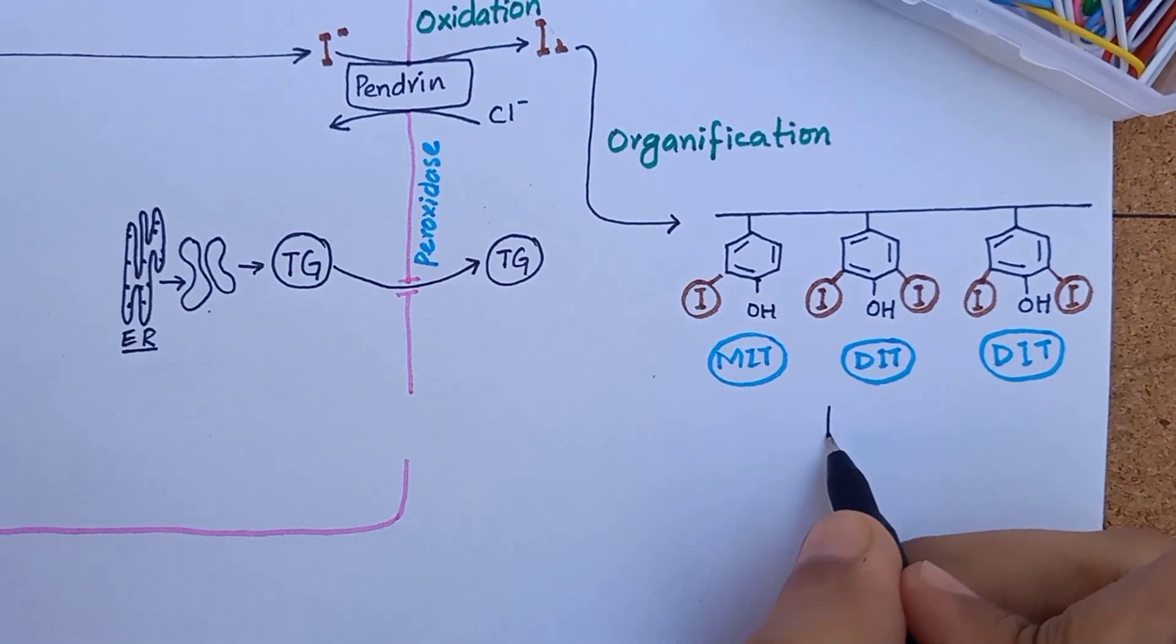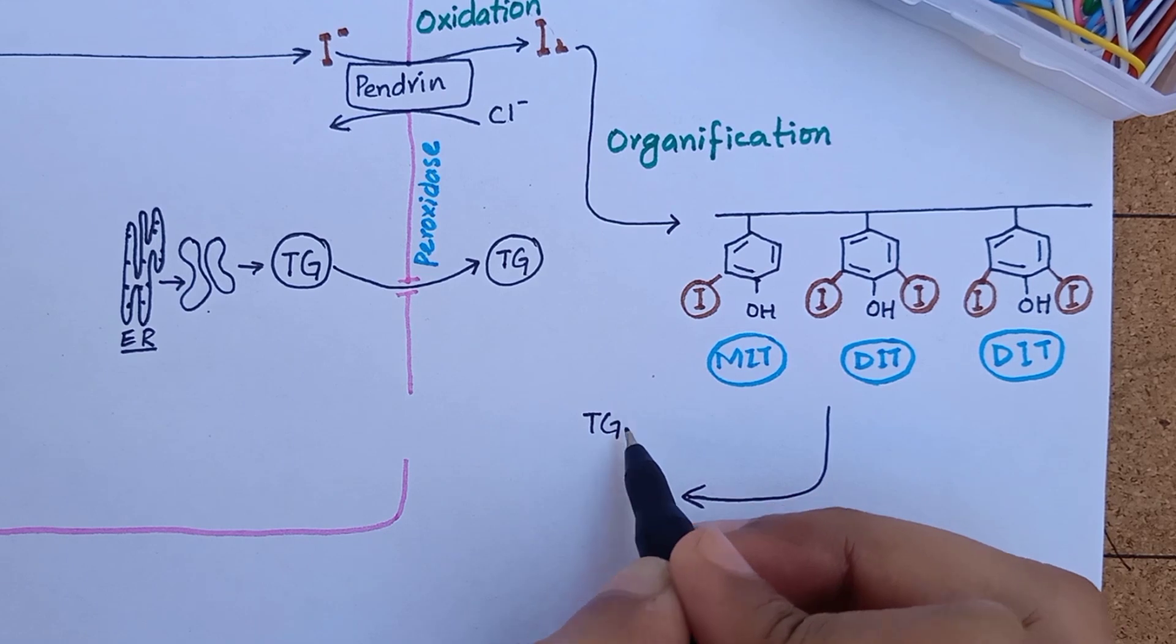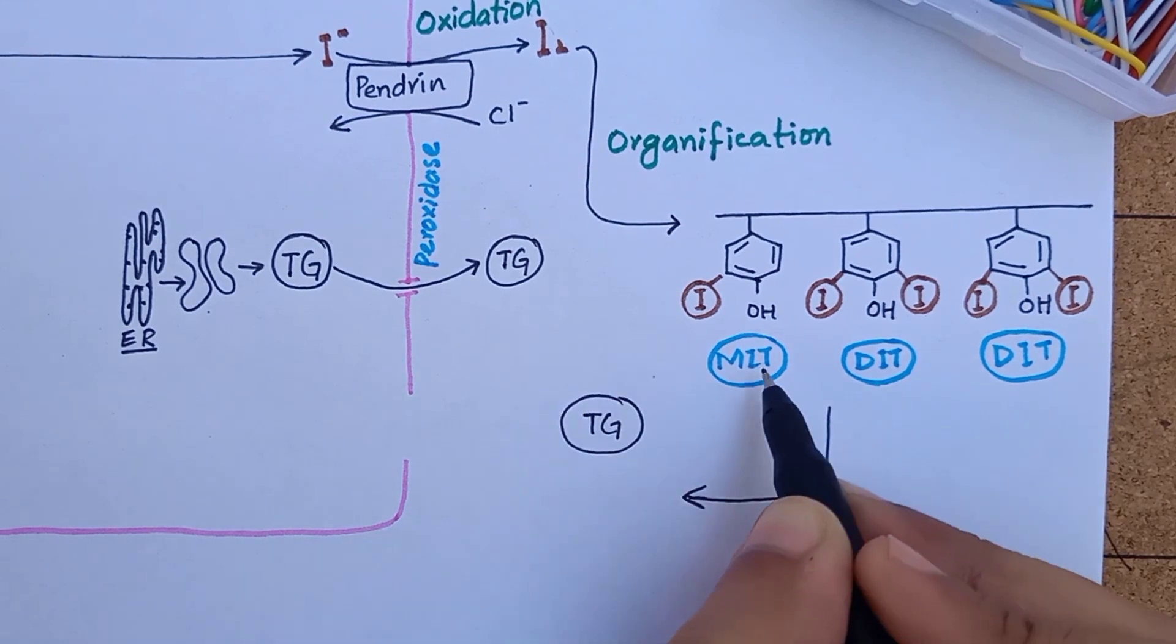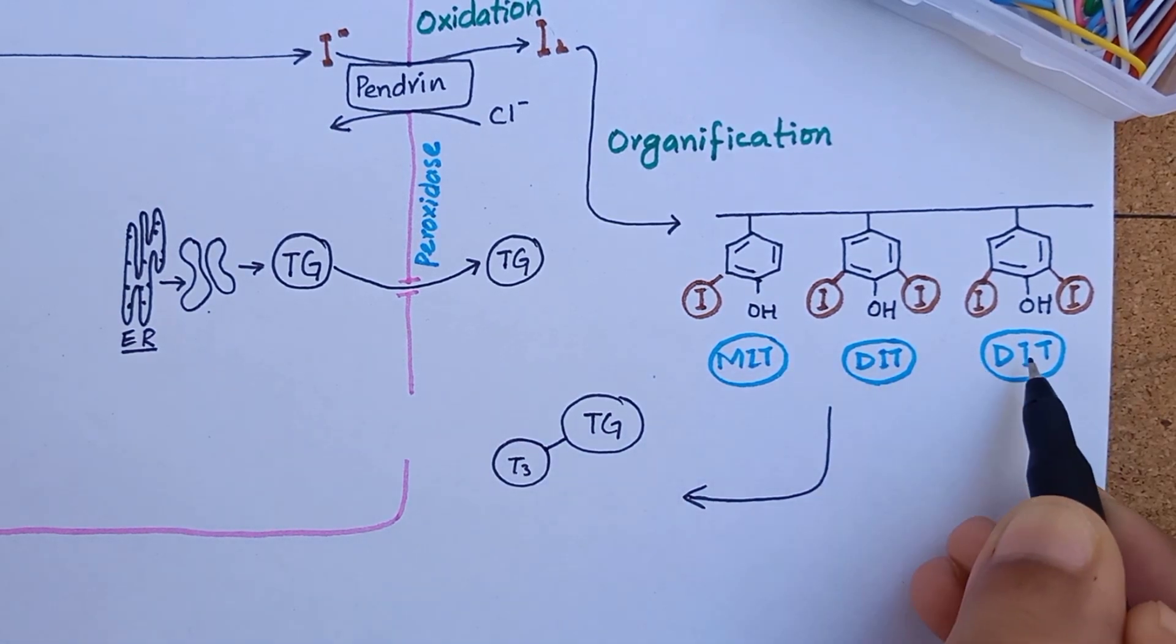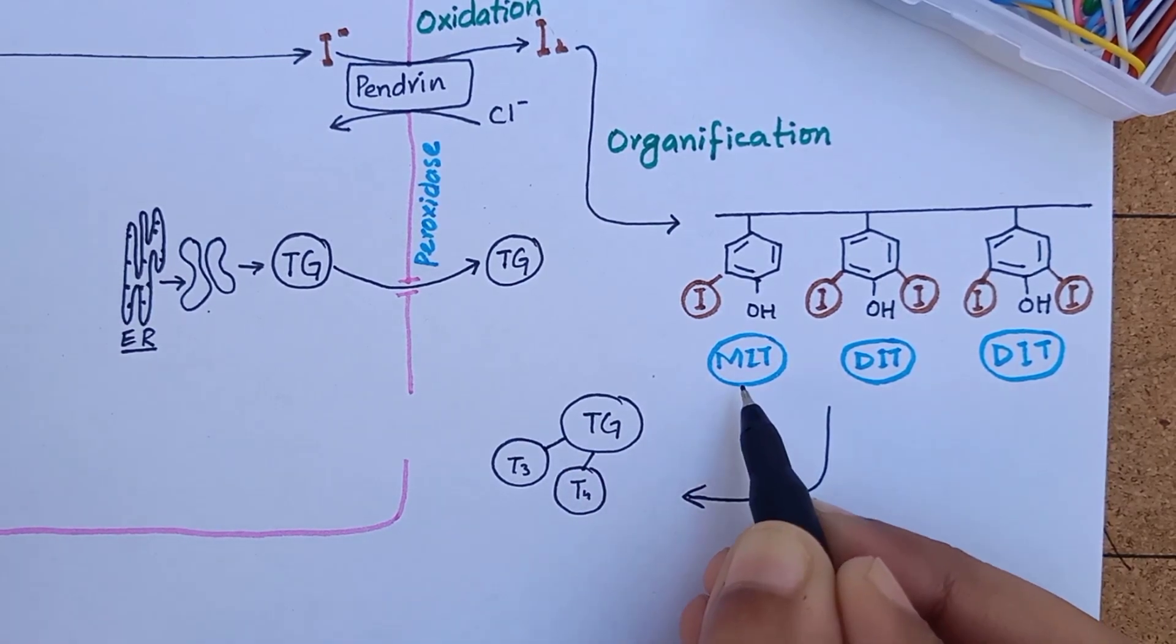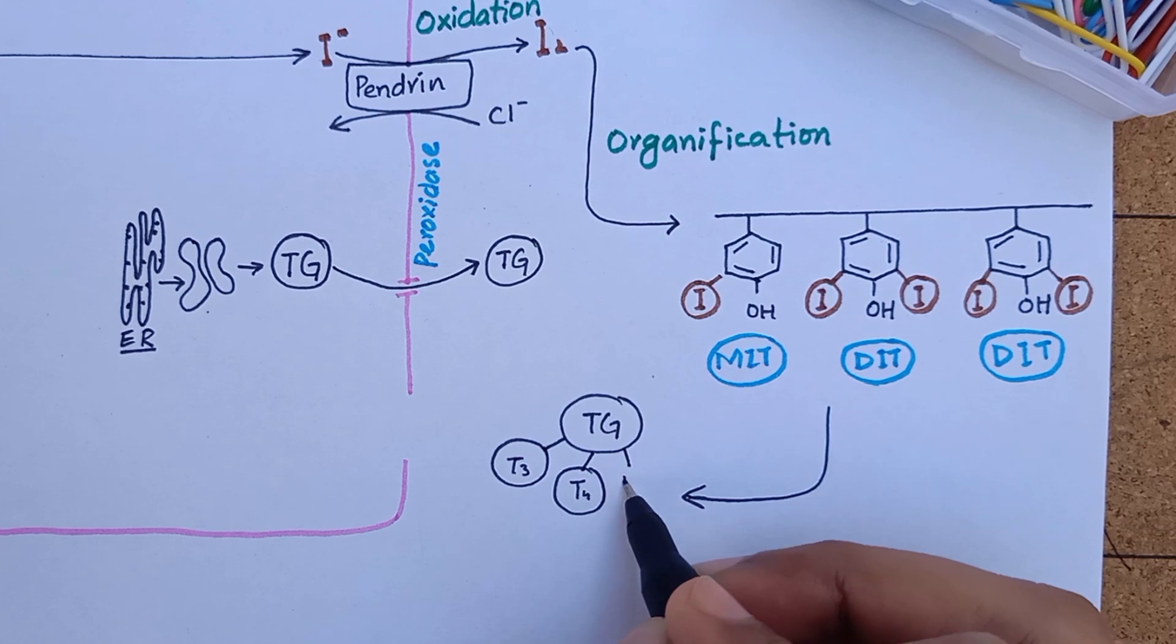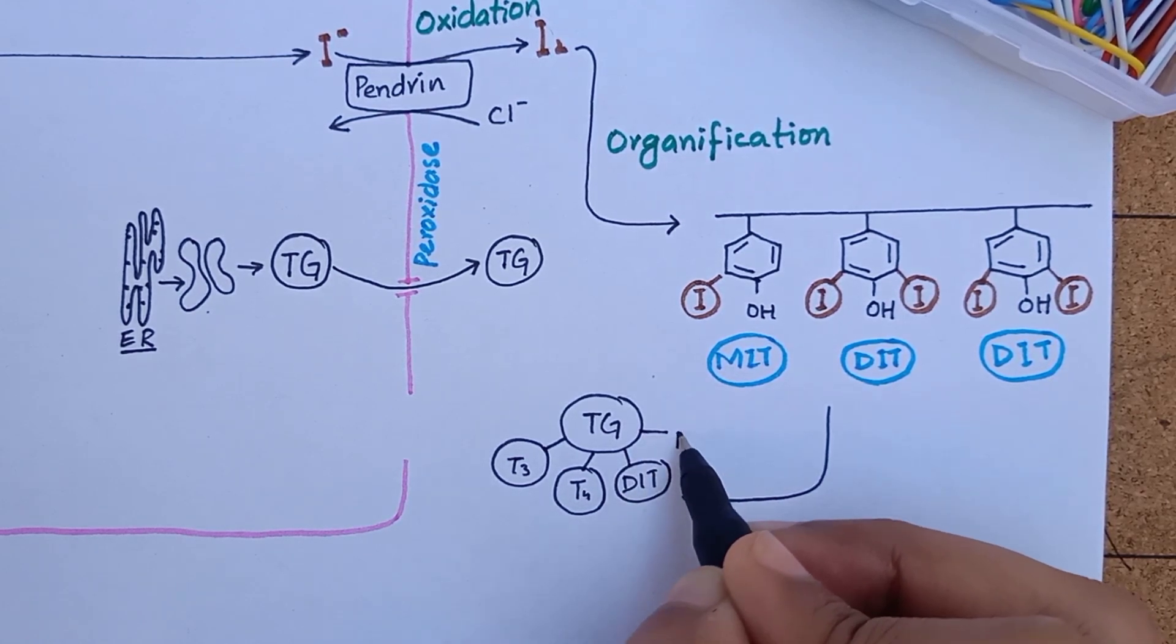These iodothyrosine residues become coupled with one another. When one molecule of MIT couples with one molecule of DIT, it forms triiodothyronine or T3. When one molecule of DIT couples with another molecule of DIT, it forms thyroxine or T4, while some of the MIT and DIT remains attached to the tyrosine as is.